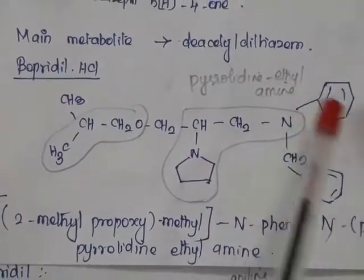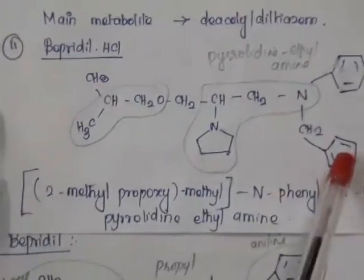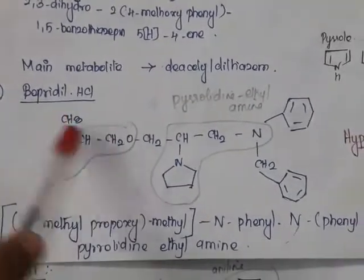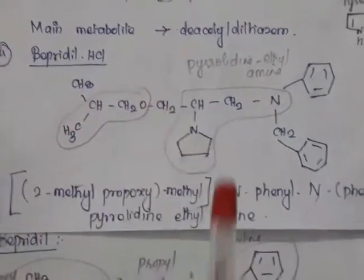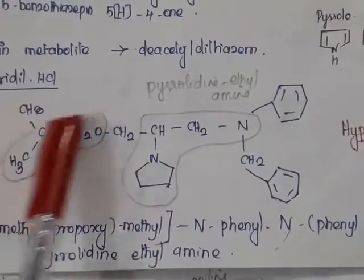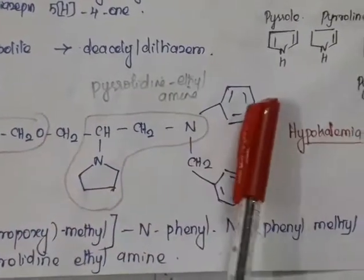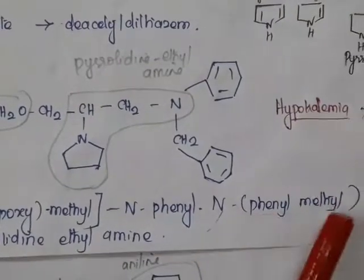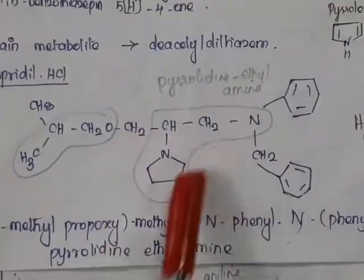With the nitrogen of pyrrolidineethylamine, a phenyl ring is attached, and also benzyl (phenylmethyl) is attached. There is a propoxy group where the second carbon is connected with methyl — that is 2-methylpropoxy. So the chemical name is N-(2-methylpropoxymethyl)-N-phenyl-N-benzyl-pyrrolidineethylamine.